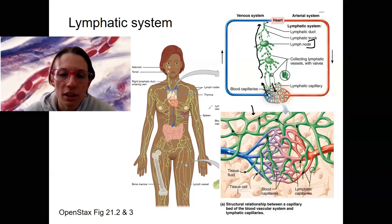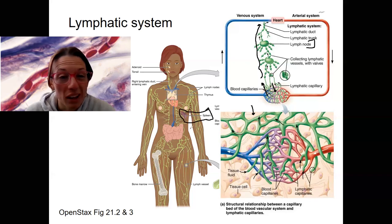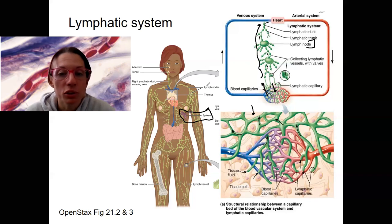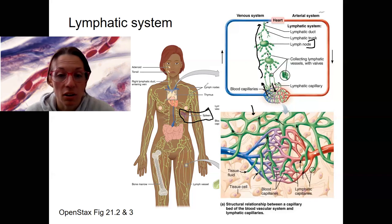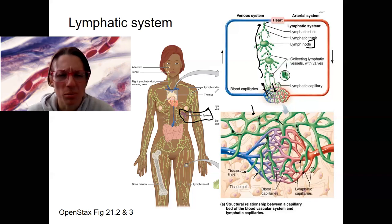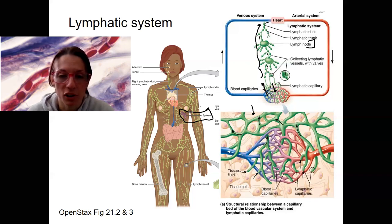Another one is the spleen. You saw the spleen in the rat — very red, it has a lot of blood. The spleen is a site of filtering and cleaning of blood. Lymphocytes are activated and proliferate there. It also stores a bunch of stuff: iron, monocytes, and platelets. So it has various functions, with some of them being immune.